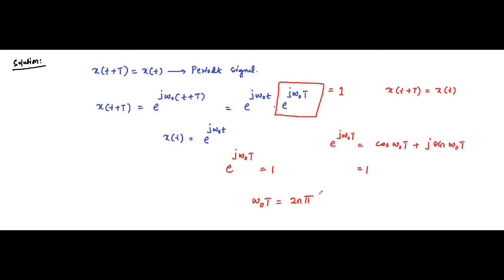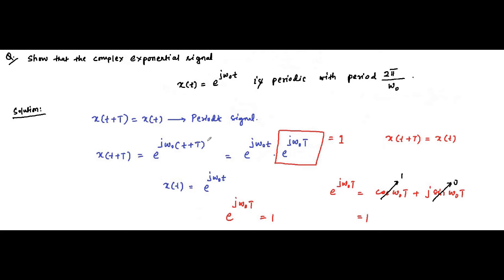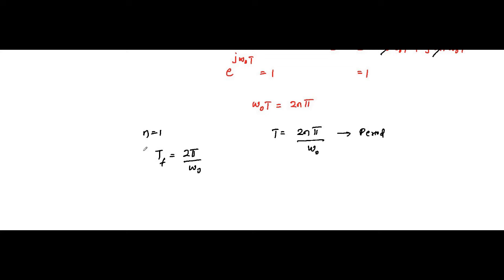It is only possible then: sin of any multiple of 2nπ will always be 0, and cos(2nπ) is always equal to 1. So that means T = 2nπ/ω₀. This is the period of the signal. And if we take n = 1, the smallest — the fundamental period — then the fundamental period equals 2π/ω₀. So yes, we have proved that x(t) = e^(jω₀t) is periodic with a fundamental time period of 2π/ω₀.